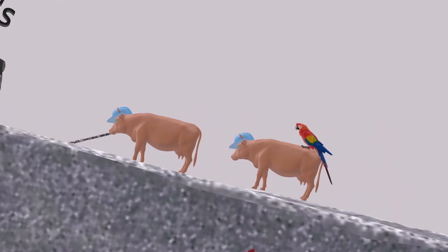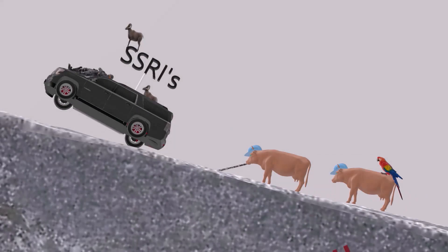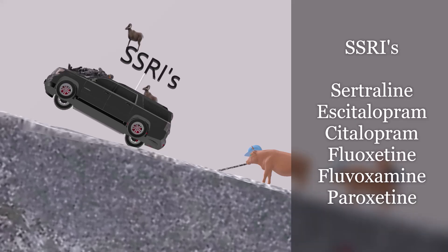Then we see two oxen who are teenagers — the ox teens. One plays the flute: flute ox that's a teen for fluoxetine. We can imagine he is also mean, which reminds us of fluvoxamine. And then there is the ox with the parrot — the parrot ox that's a teen for paroxetine. So the SSRIs we want to be aware of are sertraline, escitalopram, citalopram, fluoxetine, fluvoxamine, and paroxetine.